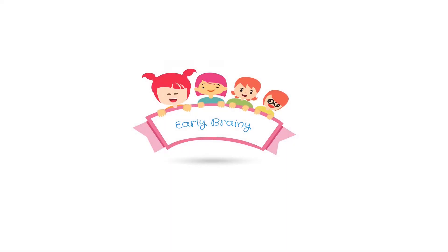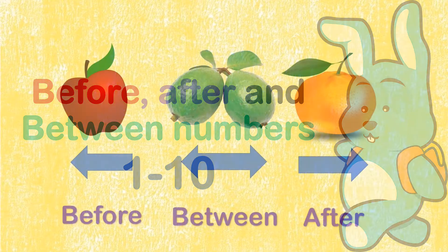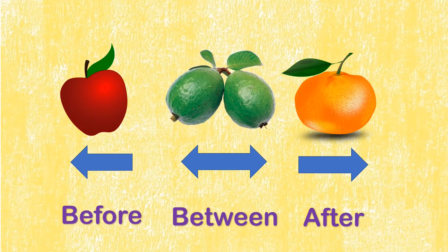Hello everyone, welcome back to my channel Early Brainy. Today we learn before, after, and between numbers from 1 to 10. Before learning with the numbers, let's understand the position. The guava is in between apple and orange. The apple is before guava and the orange is after the guava.